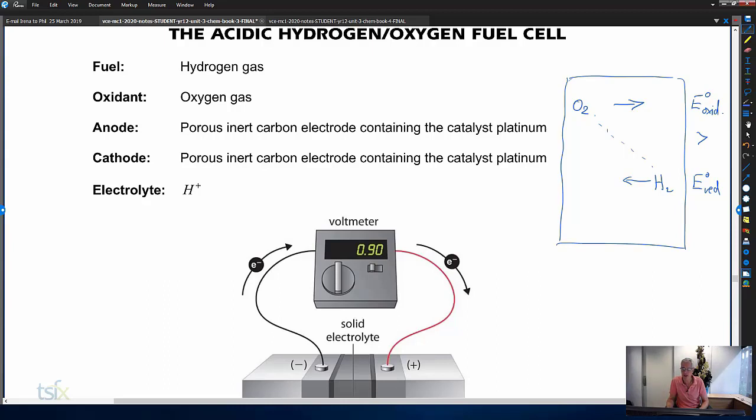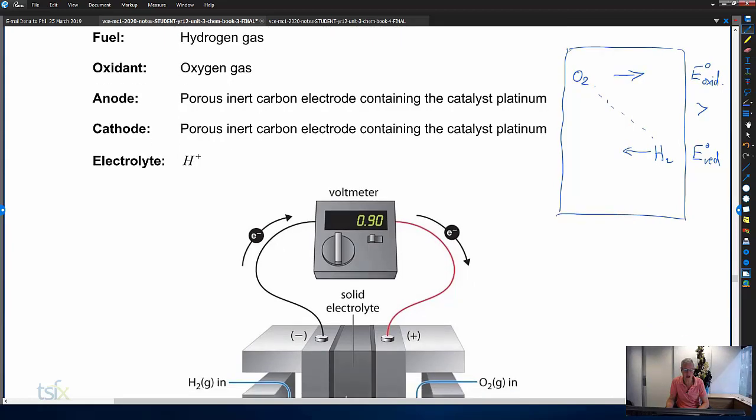When you do electrolysis, you'll see that there's lots of unfavorable diagonals, and that just means you need energy to make them go. Favorable diagonal, the E0 oxidant greater than the E0 reductant, you have got a spontaneous redox reaction. It doesn't tell you it's going to be fast, it tells you nothing about the rate of the reaction, and that's coming up in book four. Rates of reaction.